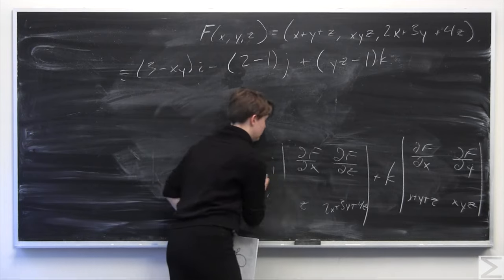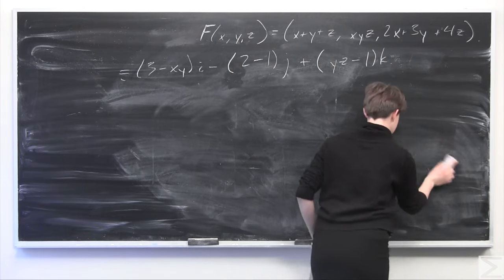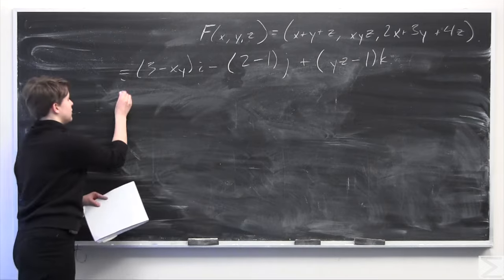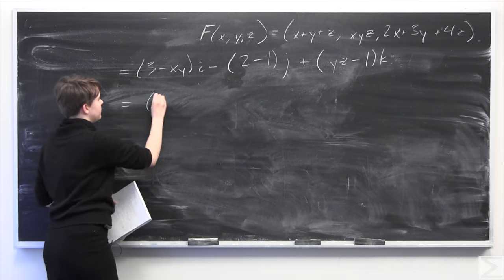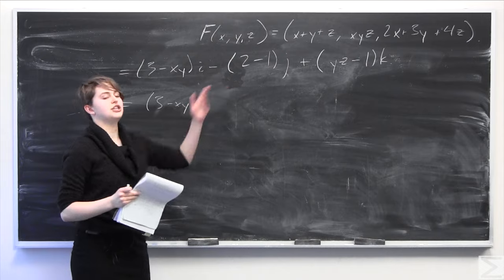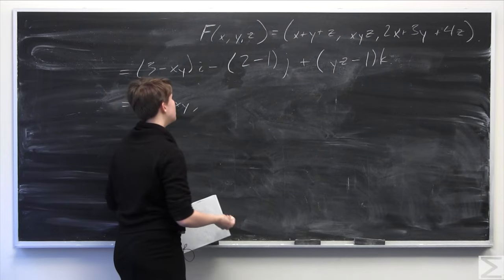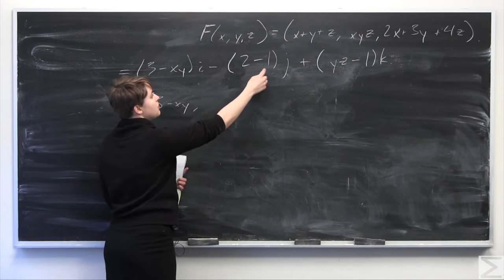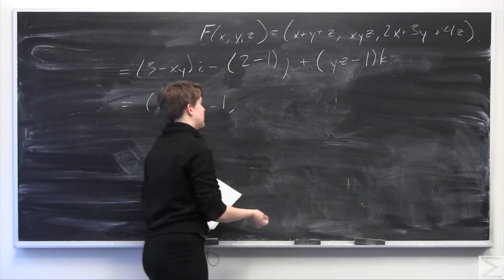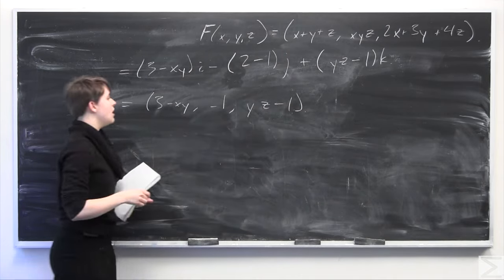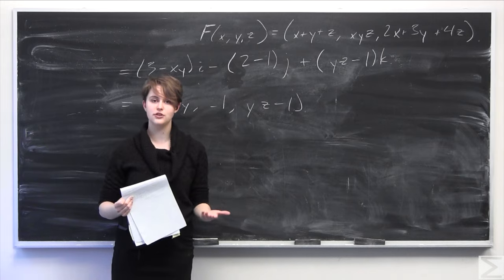Now we just need to simplify and then take the divergence. The hardest part — taking the curl — is done. Writing the coefficients of i, j, and k: we have (3 minus xy) for the i component, negative 1 for the j component (since 2 minus 1 is 1, with the negative sign out front), and (yz minus 1) for the k component. So the curl of the vector field is the vector (3 minus xy, negative 1, yz minus 1).